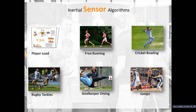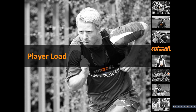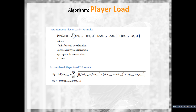Here are some examples of the types of variables our inertial sensors act upon: player load, free running, cricket bowling, tackles, goalkeeper diving, and jumps. We'll step through each in a little detail. The first parameter I want to discuss is player load — there was a presentation earlier this year on player load, so I won't go into as much detail, but I want to give some examples of how it's used in the field. Essentially, the player load formula is an instantaneous rate of change in the tri-axial accelerometers with a square root and a scaling factor.